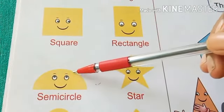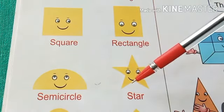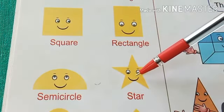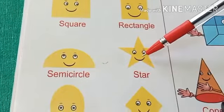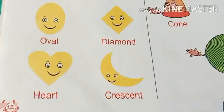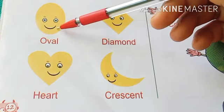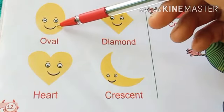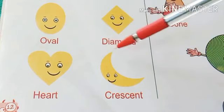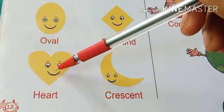This is a star — star means tara. This is an oval — oval means anDAkaar. This is a diamond — diamond means heera.